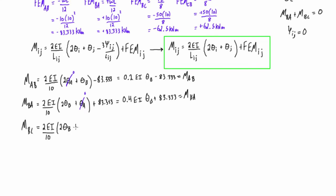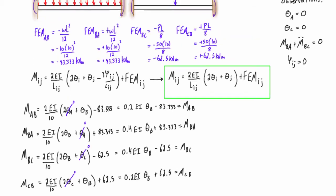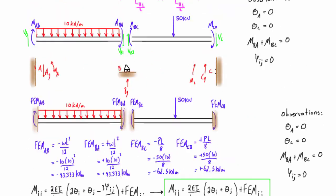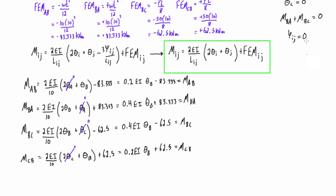We apply the equation two more times for M-BC and M-CB. Be careful that the first letter replaces all I's and the second letter replaces all J's. The length of BC is also 10 meters. The fixed-end moments are negative 62.5 and positive 62.5 respectively. The θC terms drop out because of the rigid connection in the original problem.